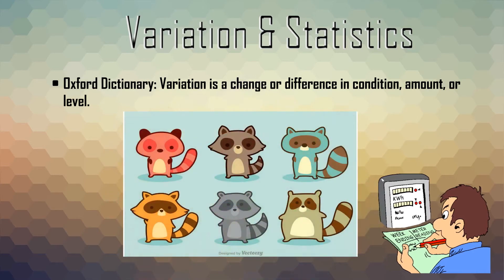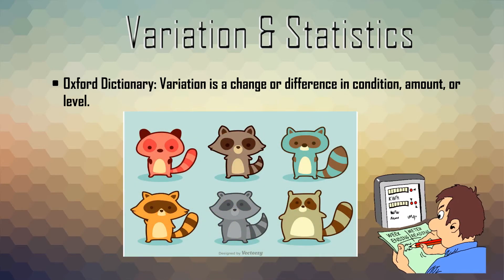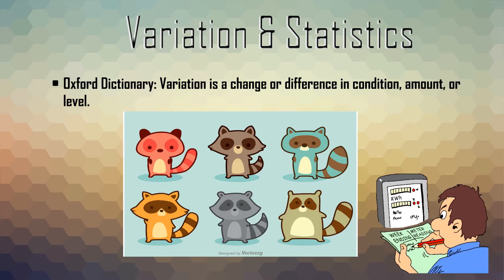By looking at the image of the raccoon, the different color and the different shape of the raccoon, that difference we call as variation.